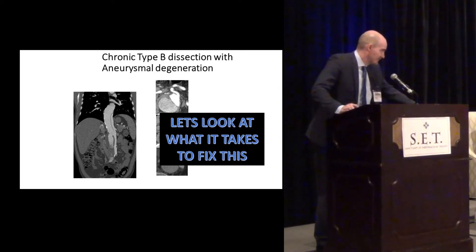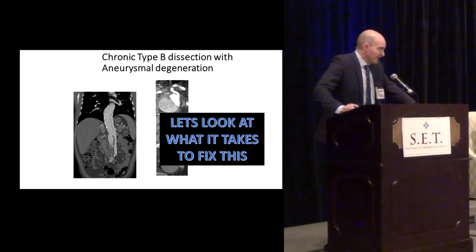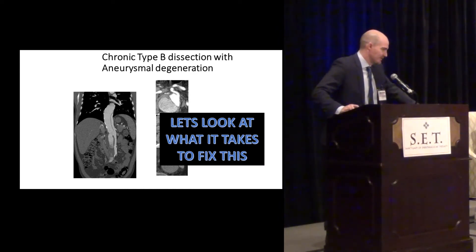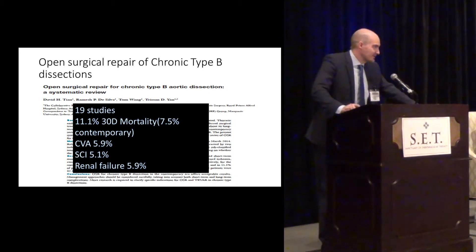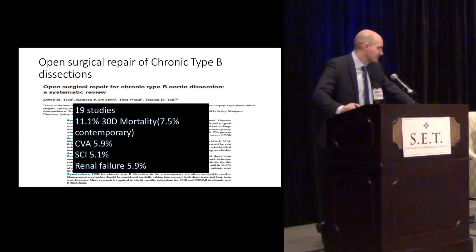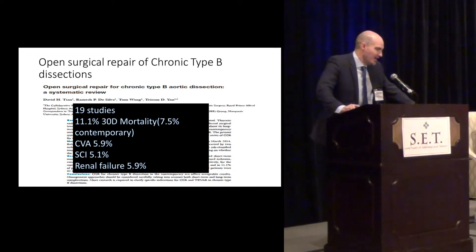Once we get these referrals — we've seen a lot of these pictures earlier today — those are very tough cases: patients that have aneurysmal degeneration and type B dissection. There is some data from some centers, but these are very complex procedures. A systematic review of 19 studies shows mortality is not insignificant: 11% in the entire series, 7.5% in the more contemporary series, with higher-risk complications like stroke, renal failure, and spinal cord ischemia. This is in centers with large aortic programs and larger volumes, and it will be very difficult to reproduce those results in the community.